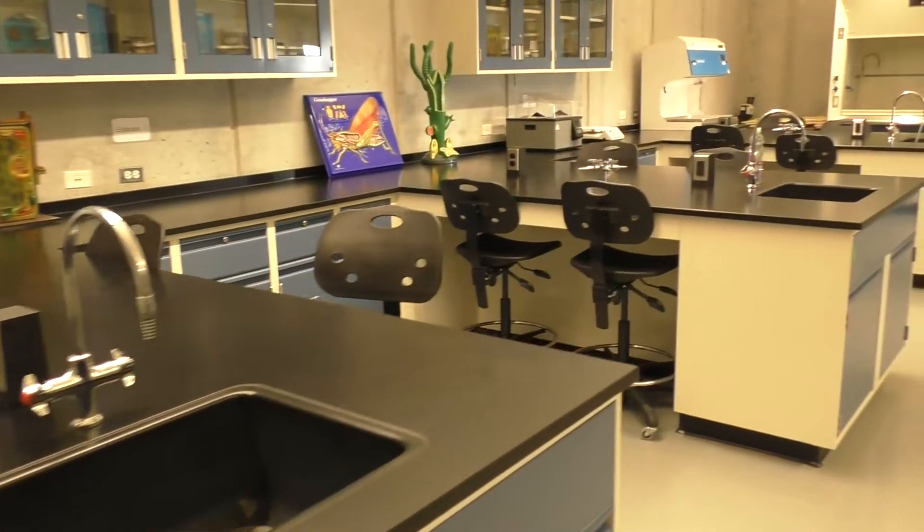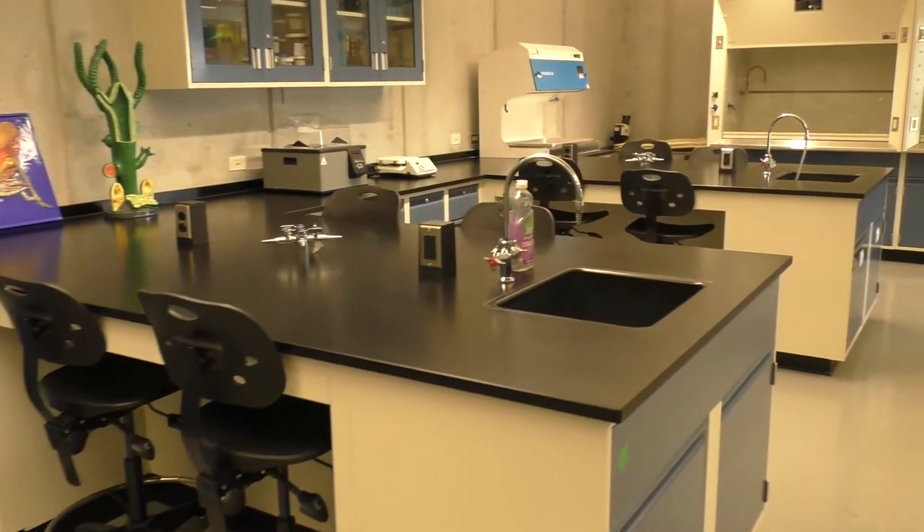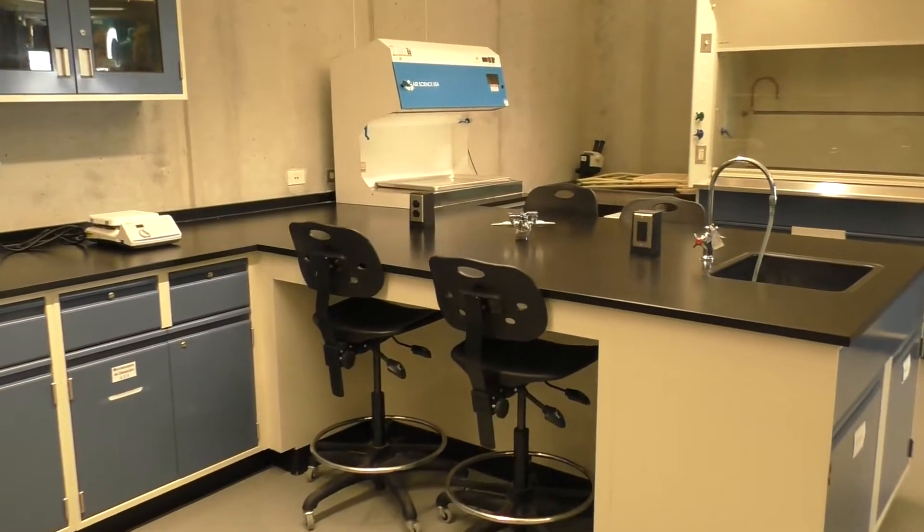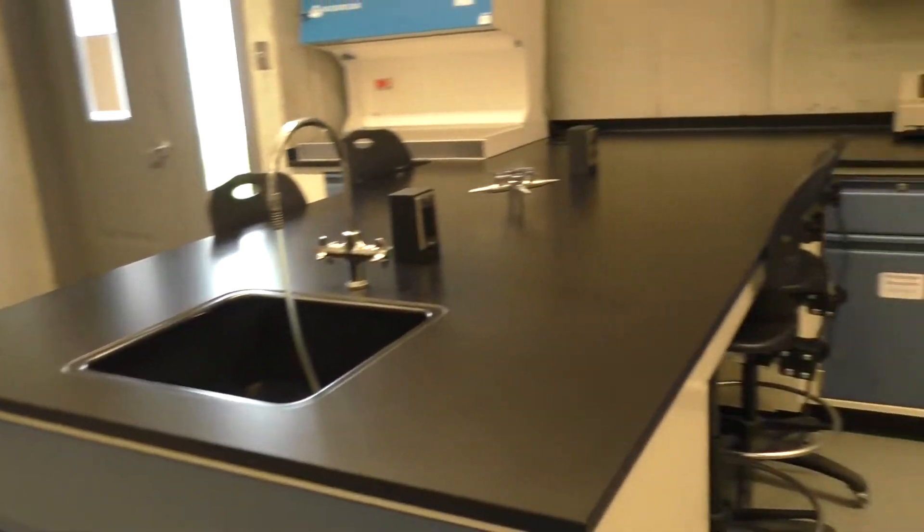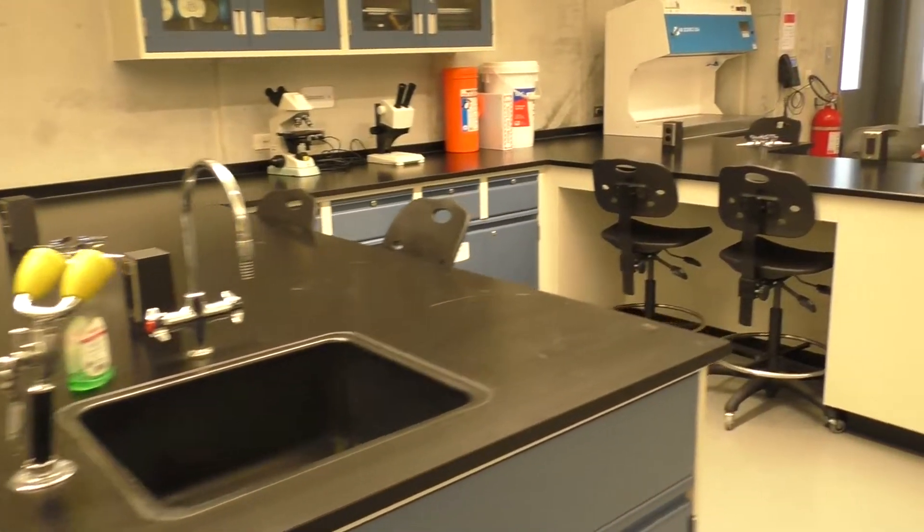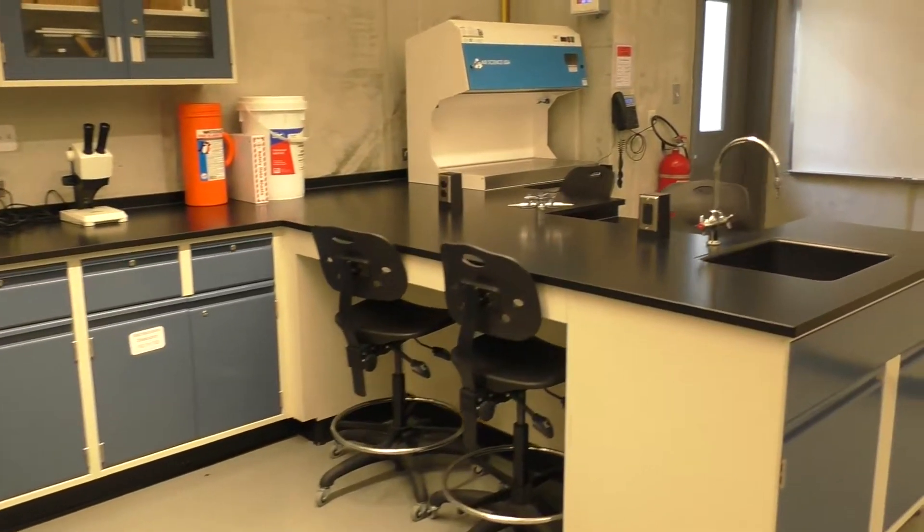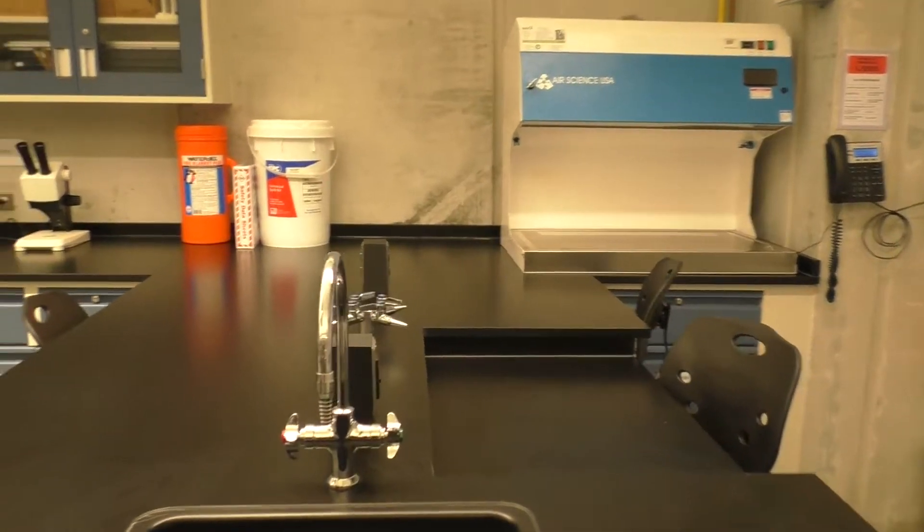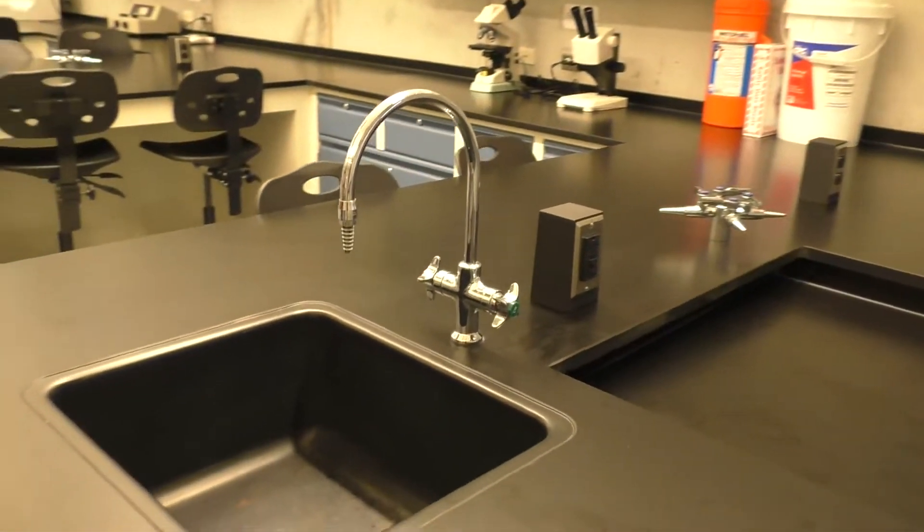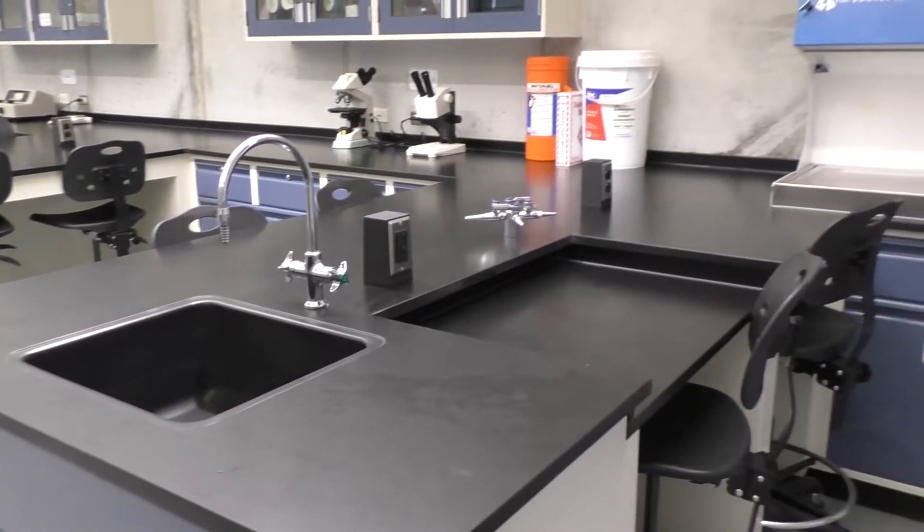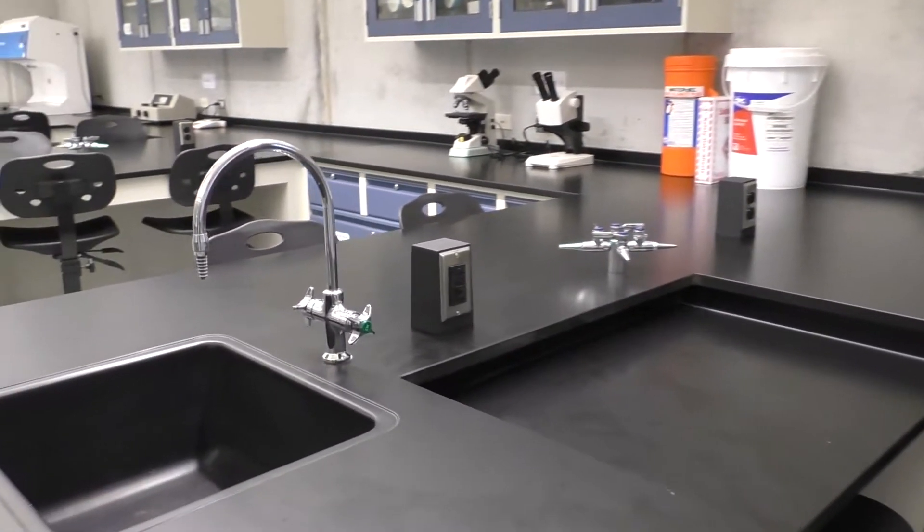The work area for the students consists of six stations, each with four seats. Each station has its sink, electrical outlets, and gas tabs.